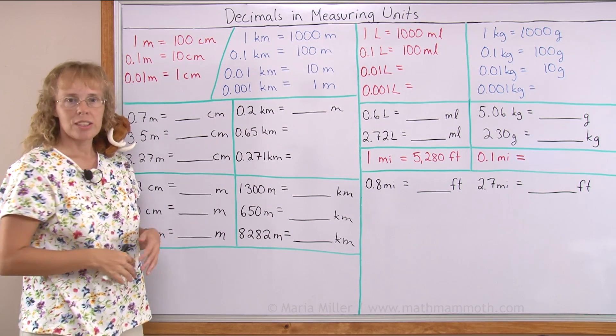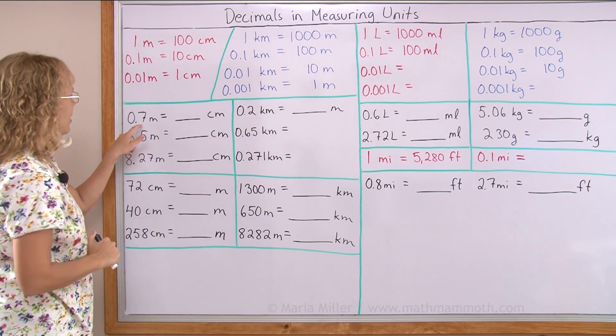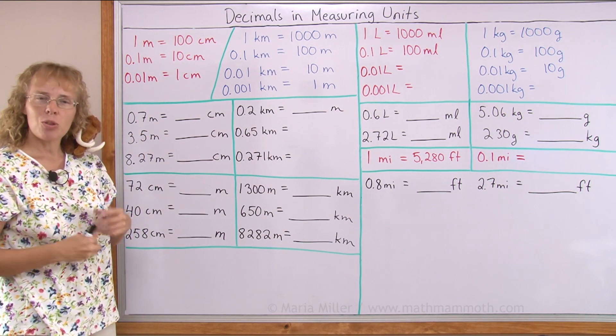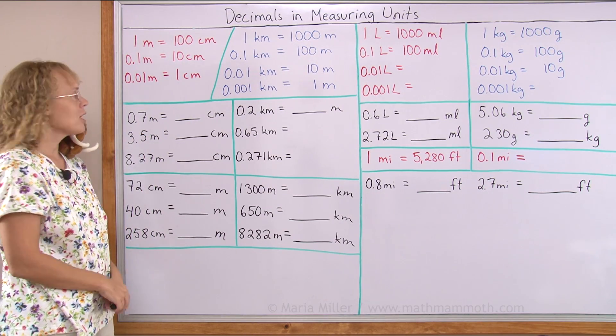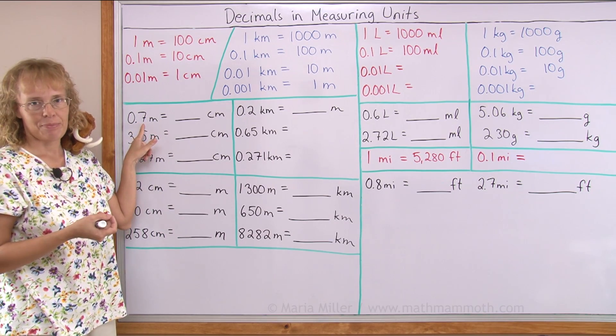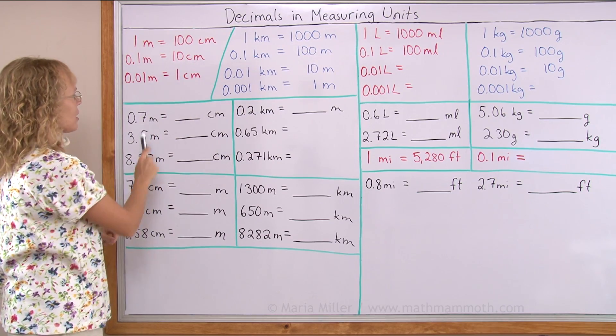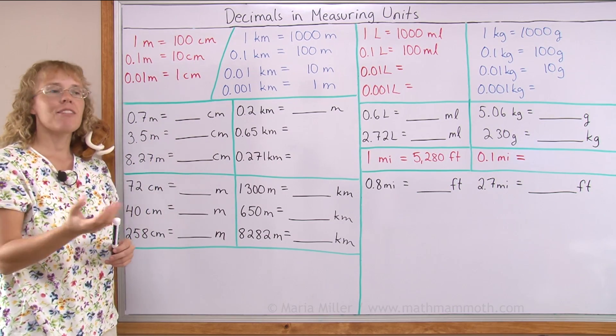Let's do these conversion problems thinking in those terms. Here I have seven tenths of a meter. Don't think of it as 0.7 meters, but first think of it as seven tenths of a meter. One tenth of a meter is 10 centimeters. Seven tenths of a meter is 70 centimeters.